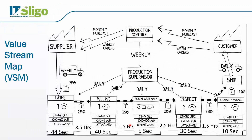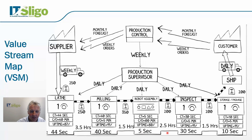If you remember our value stream map, looking at five process steps here — we took some measurements but didn't discuss them in detail, and down at the bottom we drew the timeline but didn't fill it in. Now I'll fill that in. The value add time is equivalent to the cycle time of each step. When the part comes out of the lathe, it sits between the lathe and the milling machine for 3.5 hours — we measured 250 pieces waiting there.